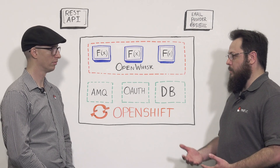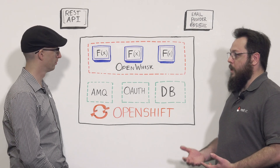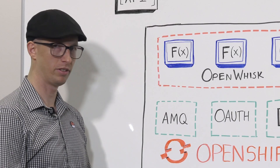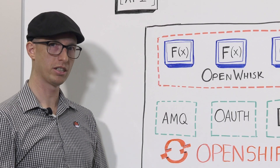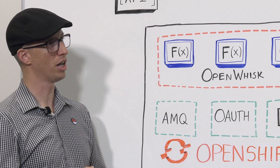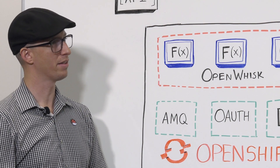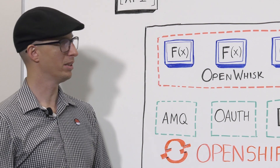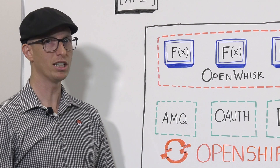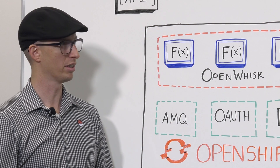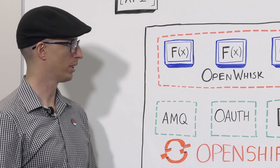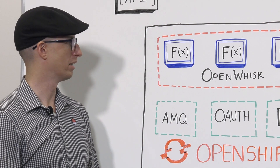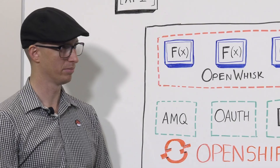And I'm not limited to just one language, am I? Not in OpenShift Cloud Functions. You can actually use Java, Python, Go, PHP, JavaScript, or many other languages — whatever your company already has expertise in.